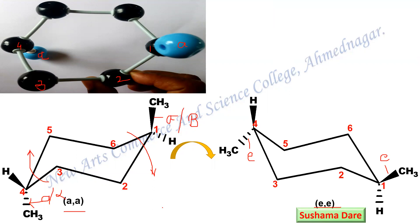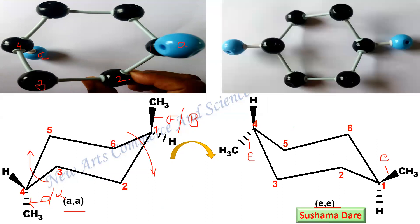Now let us talk about the ball and stick model of this conformer. Positions 1, 2, 3, and 4 — you can see both these substituents are equatorial and equatorial. As you know, whenever an axial substituent is present it has a gauche interaction. So which one is the more stable structure? The EE conformer is more stable. That's why at equilibrium the larger arrow indicates the greater population is of the EE conformer rather than the AA conformer.